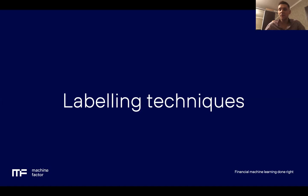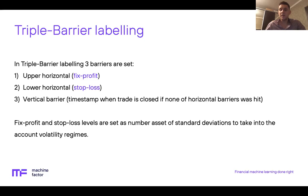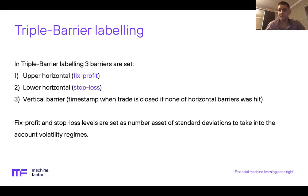The first labeling technique is triple barrier labeling, suggested by Marcos Lopez de Prado in his book Advances in Financial Machine Learning. The idea is to set up three barriers for each sample: an upper horizontal barrier as a proxy to fixed profit level, a stop loss barrier, and a vertical barrier — the maximum time we could hold a position if none of the horizontal barriers was hit. Fixed profit and stop loss levels are set as a number of asset standard deviations rather than fixed percentages, to account for asset volatility regimes.